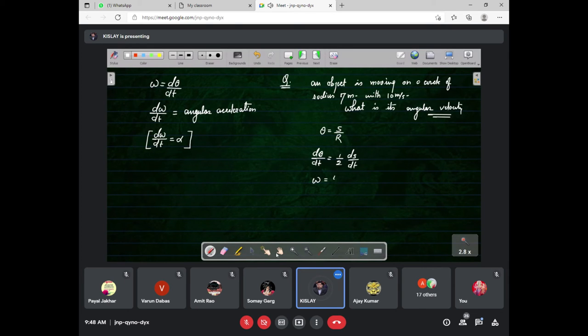This can be differentiated - dθ/dt. We have already differentiated. It is 1/r into ds/dt, and this is omega. This is 1/r into v. And v is given, so omega can be calculated: 1/7 into 10. This is 10/7 radian per second. This is the first question I have taken, a very simple question.